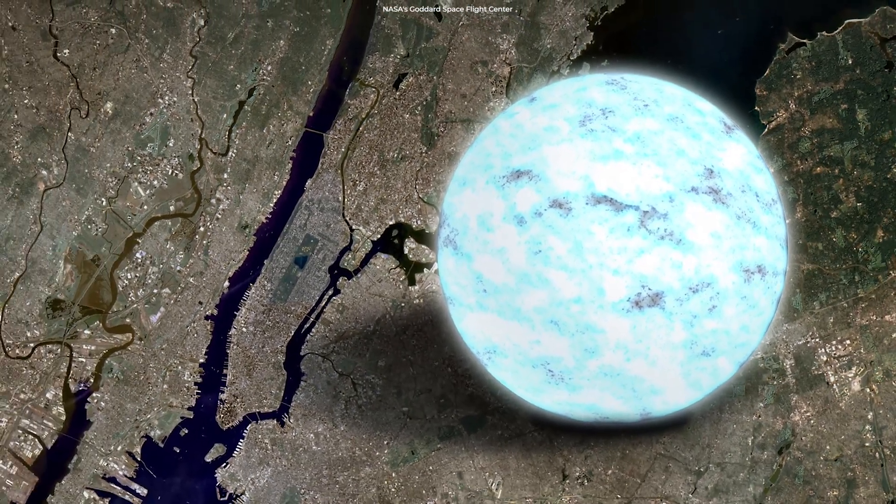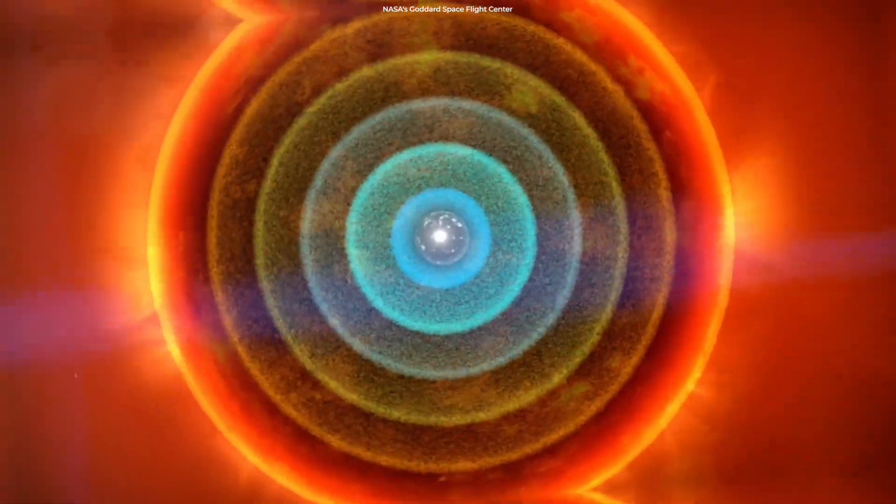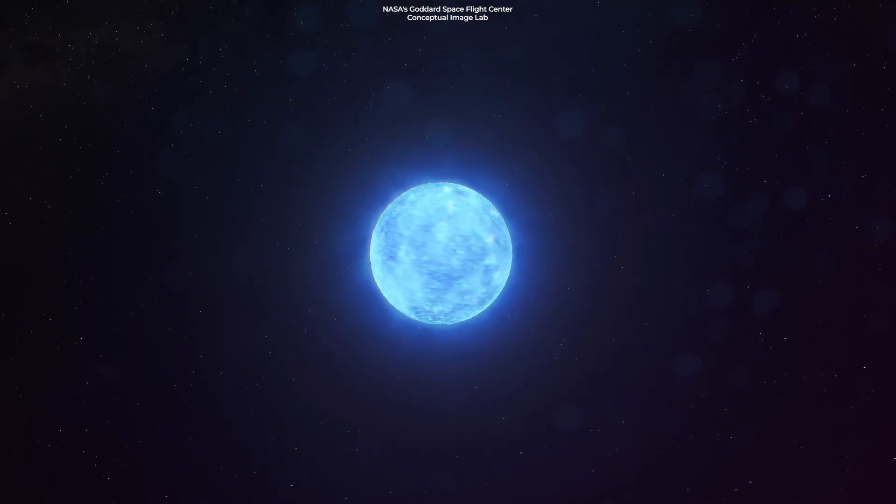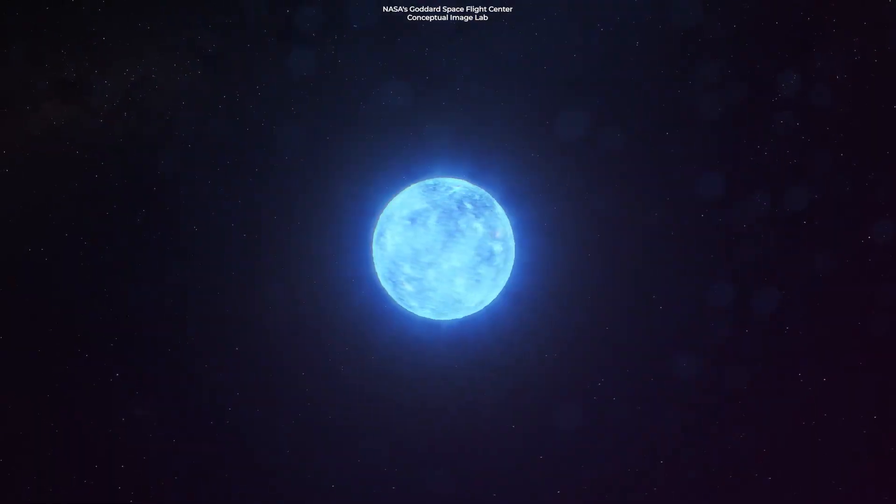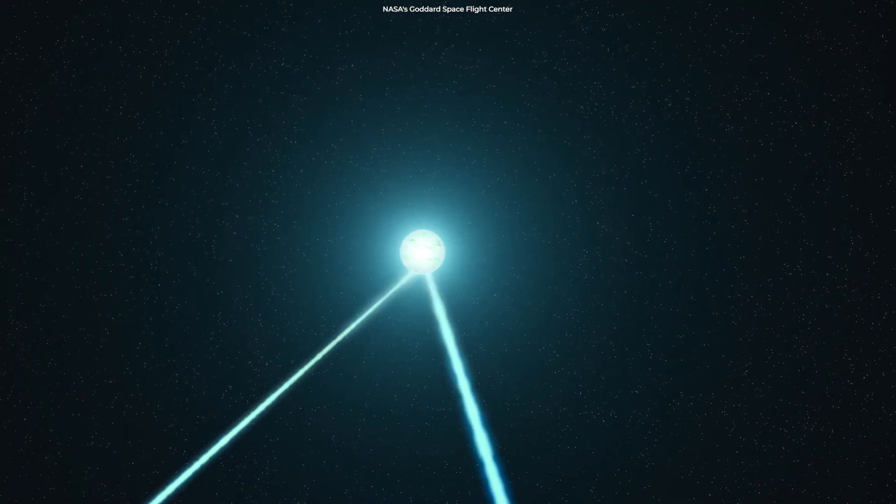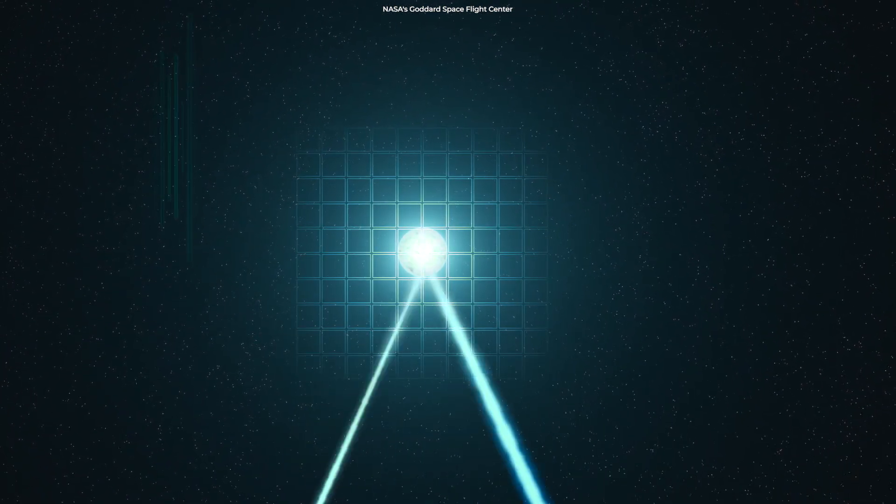Pulsars pack more mass than our Sun into a sphere roughly the size of Manhattan. Extreme gravitational forces crush protons and electrons together inside neutron stars, turning them into neutrons. I don't want you to feel dizzy, but these objects can spin up to several hundred times per second, forming intense magnetic fields and beaming radiation into space just like a lighthouse.